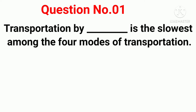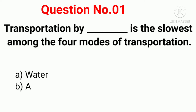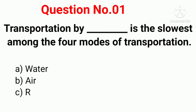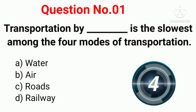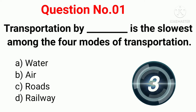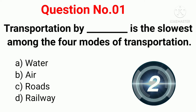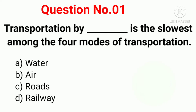Q1. Transportation by which mode is the slowest among the four modes of transportation? Option A: Water. Option B: Air. Option C: Roads. Option D: Railways. Correct answer: Option A, Water.